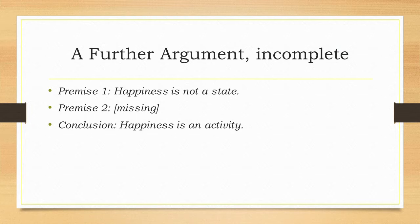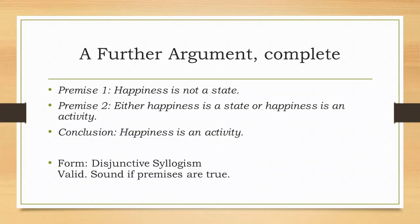Here's the argument for that. Premise one: Happiness is not a state. Conclusion: Happiness is an activity. Now, what is the missing premise? It must be something that forces us to choose between two options only — happiness is either a state or an activity; in other words, there can be no third option. So: Premise one: Happiness is not a state. Premise two: Either happiness is a state or happiness is an activity. Conclusion: Happiness is an activity. This argument has the form of a disjunctive syllogism, and it is valid.